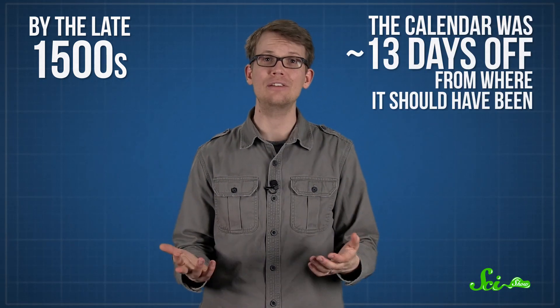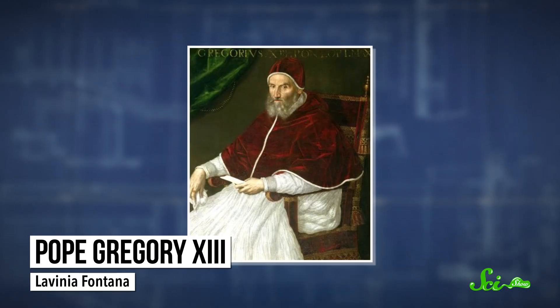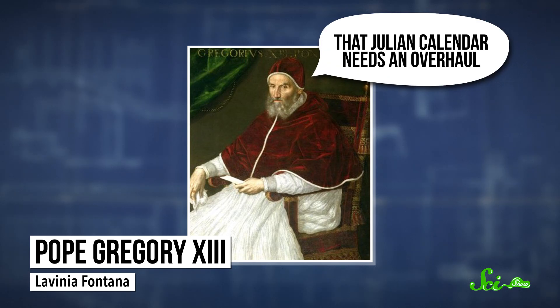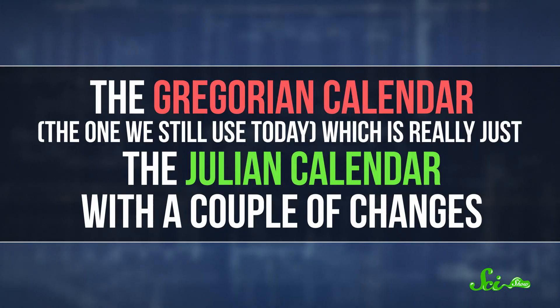It's 10 minutes a year — what could go wrong? Well, 10 minutes a year over a lot of years can really add up. By the late 1500s, around 1,600 years after Caesar, the calendar was about 13 days off from where it should have been. That's when Pope Gregory XIII, the Pontifex Maximus of the Catholic Church at the time, decided that the Julian calendar needed an overhaul. So he put together the Gregorian calendar, the one that we still use today.